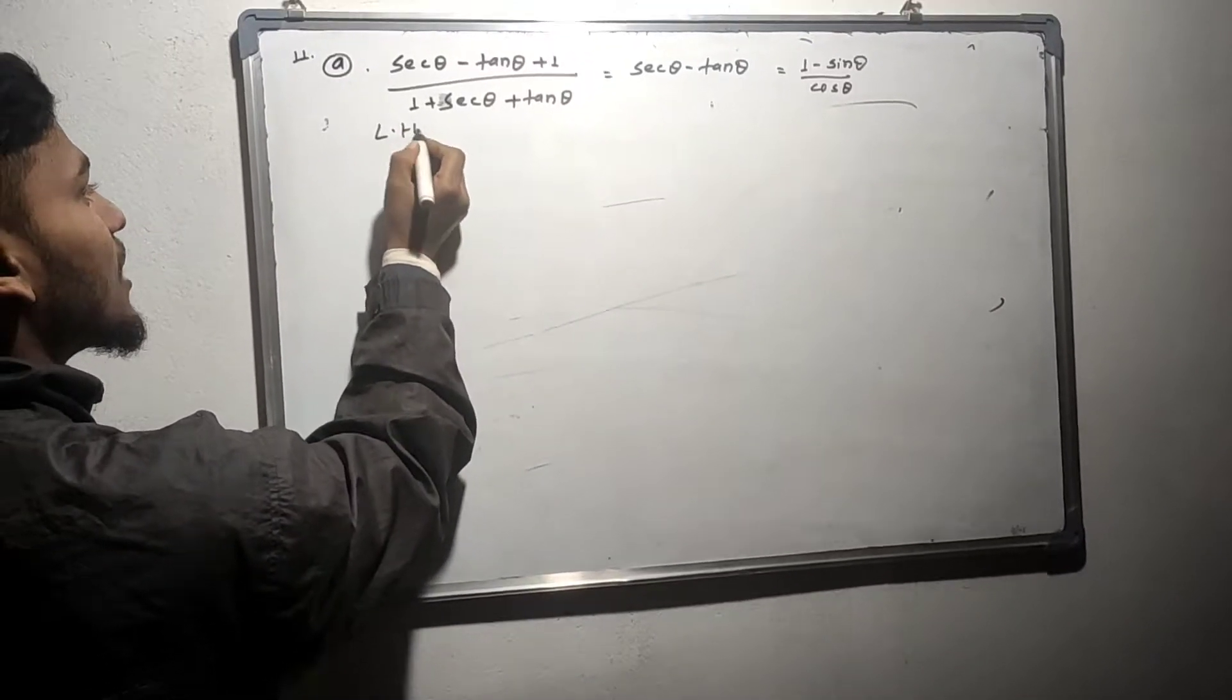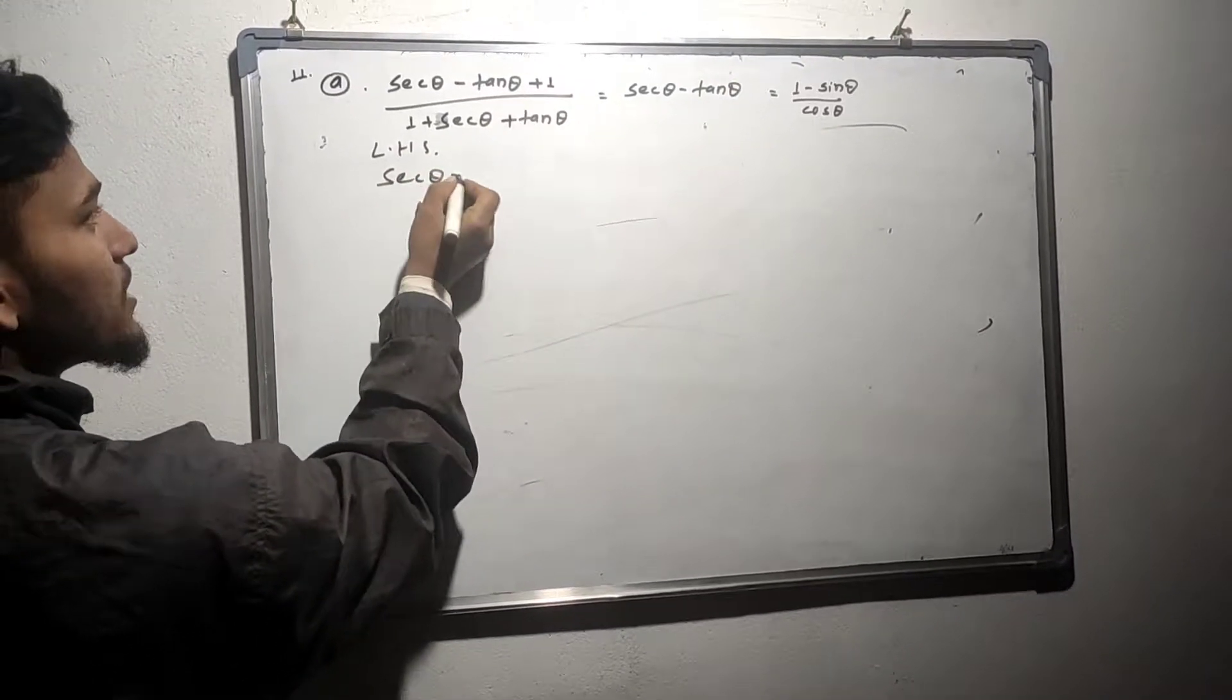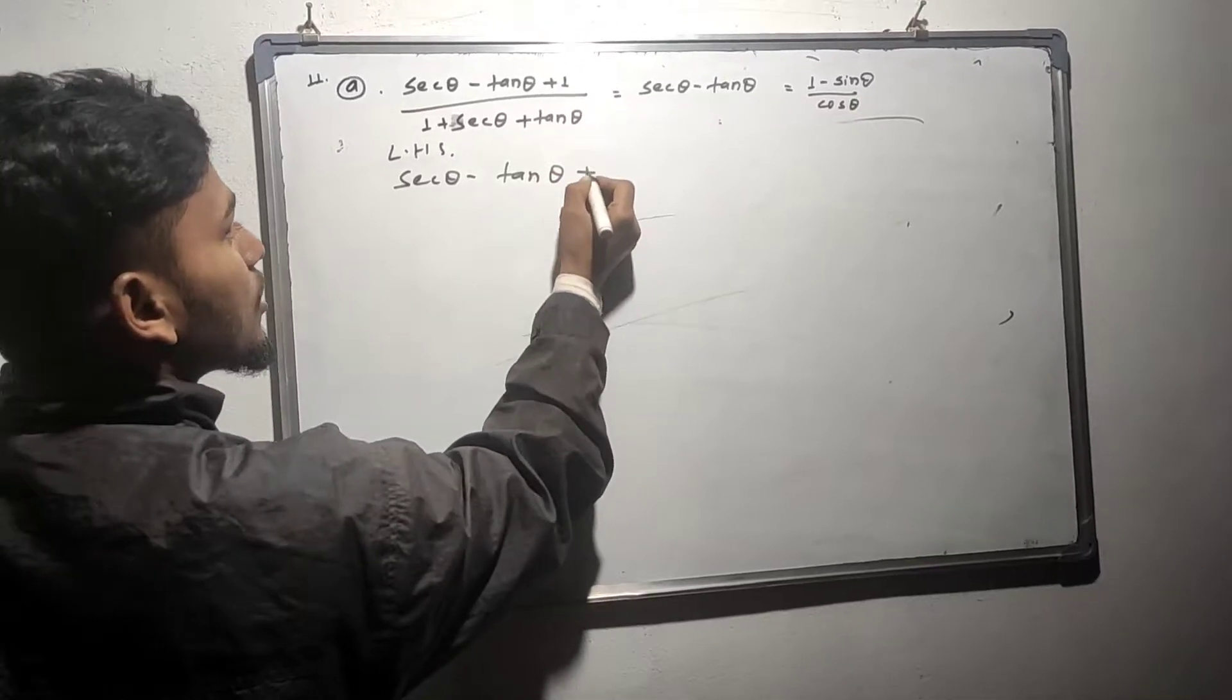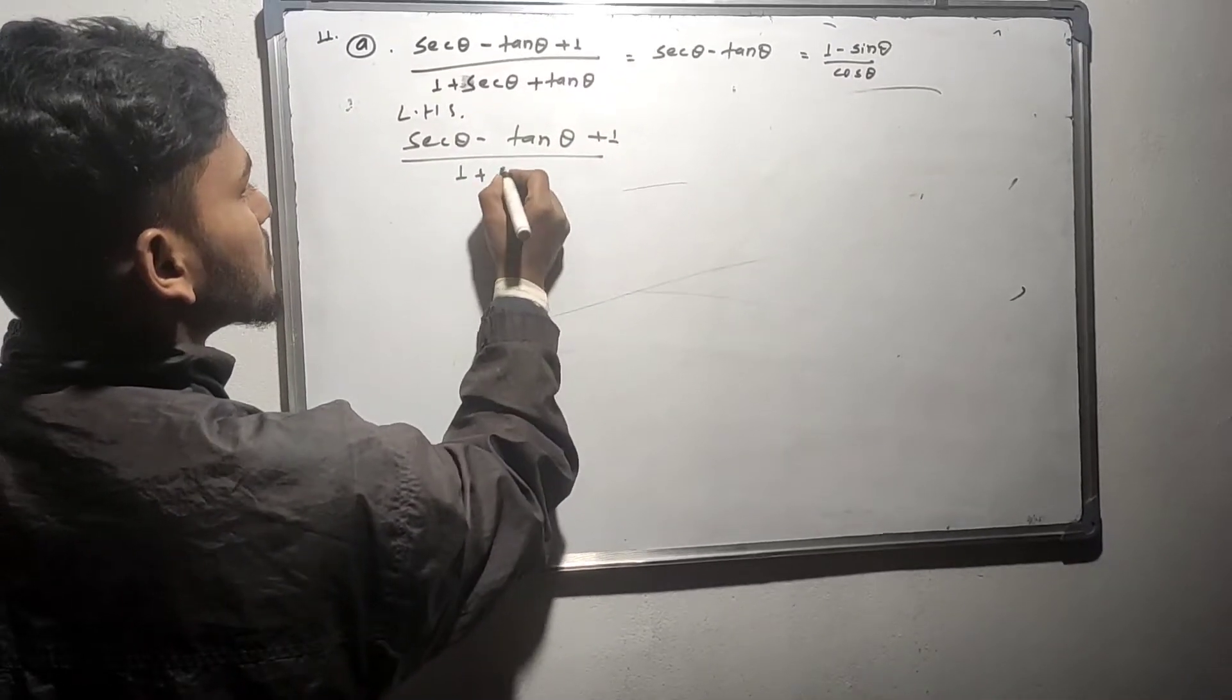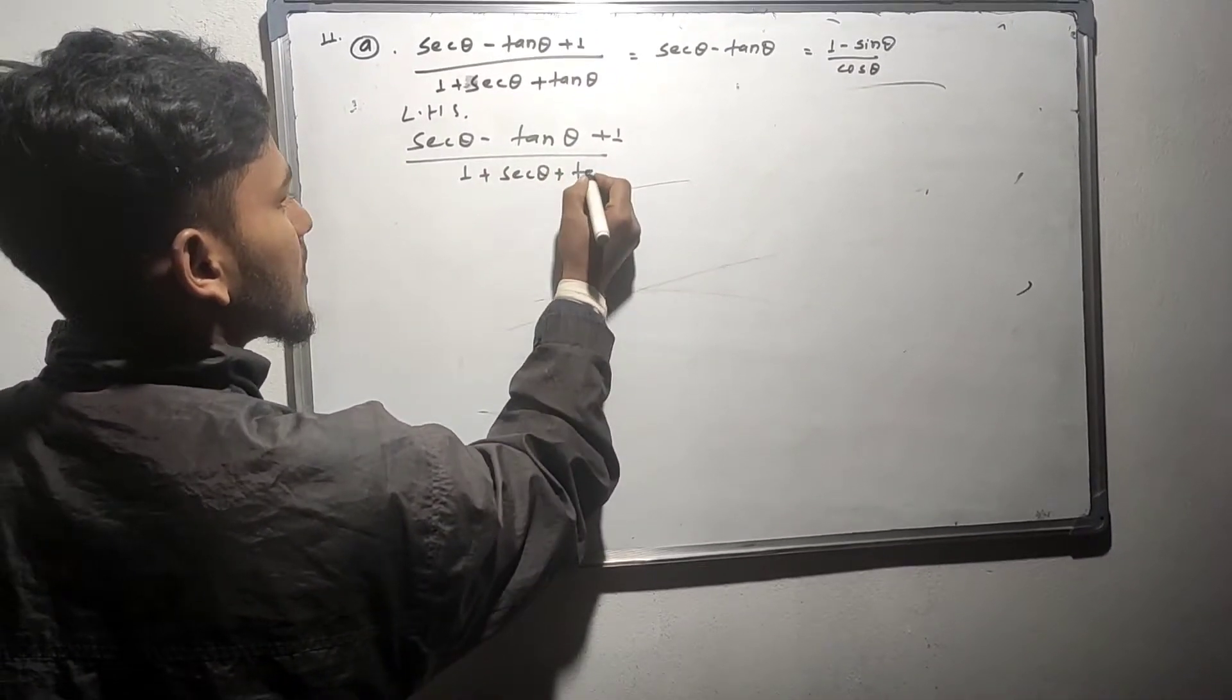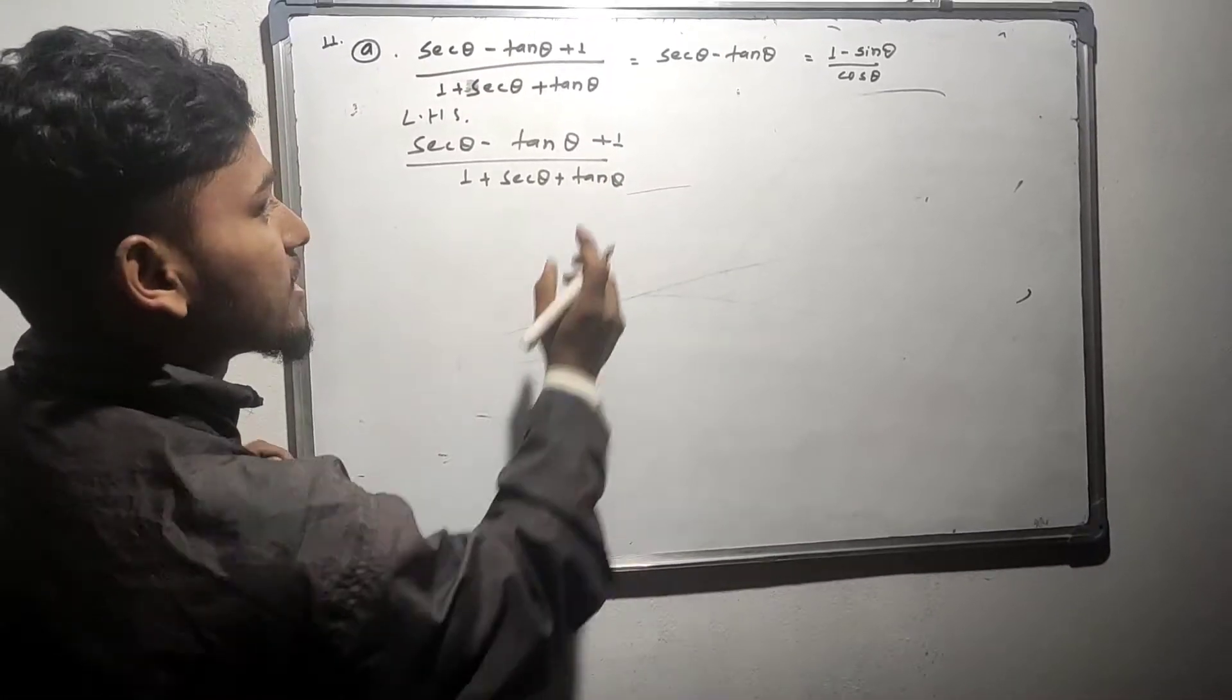This is LHS. Sec theta minus tan theta plus 1, by 1 plus sec theta plus tan theta. This is the secret.